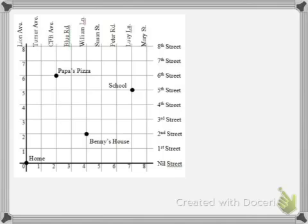Let's look at this map. Let's say that you wanted to walk from Papa's Pizza to Benny's house. How would you get there? Well, one way you could take is to go south four blocks and then east two blocks. So how far would you have traveled? Well, four and two would be six, so you would have traveled six blocks.